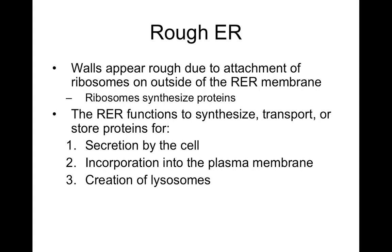Rough ER has ribosomes — the assembly sites for protein — giving it a roughish appearance. Rough ER is involved with making or synthesizing proteins that are secreted by the cell — packaged into a vesicle and exocytosed. A classic example of a secreted protein is insulin, which is an important hormone in glucose homeostasis. Insulin is synthesized by rough ER, packaged into a vesicle, and eventually secreted out of the cell. Rough ER is also involved with the synthesis of lysosomes.